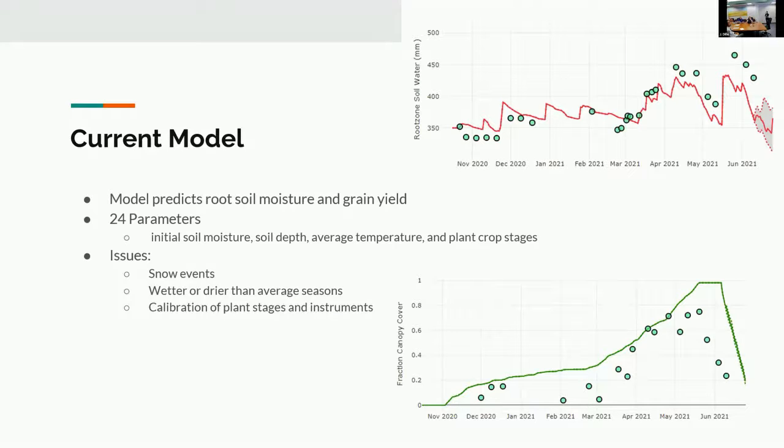It's a fairly simplified model with 24 parameters, but the model currently has some issues including one-day snow events that the model doesn't really cover. And then when you have either seasons or weeks that are wetter or drier than average, the model can't really account for that. So one of the questions is why is that? Is it because of the observations and instrumentation? Is it because the base data from the model is incorrect? Or is it because of the equations we're using in the model? That's one of the things I'm trying to figure out this summer.